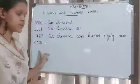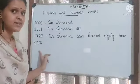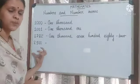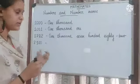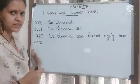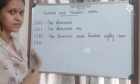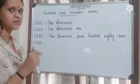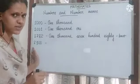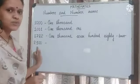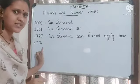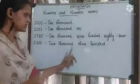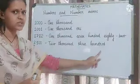Children, can you read the next number? It is also a four-digit number, so let's read from the thousands place. How many thousands are there? Two. So start with 2,000. Then 300. Let's read this once again: 2,300.